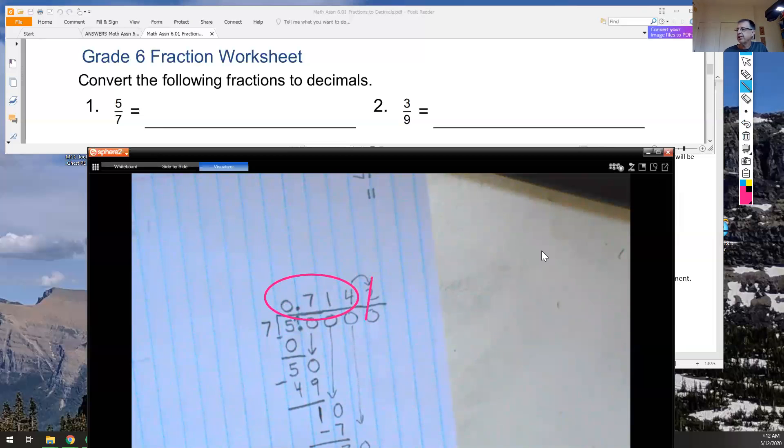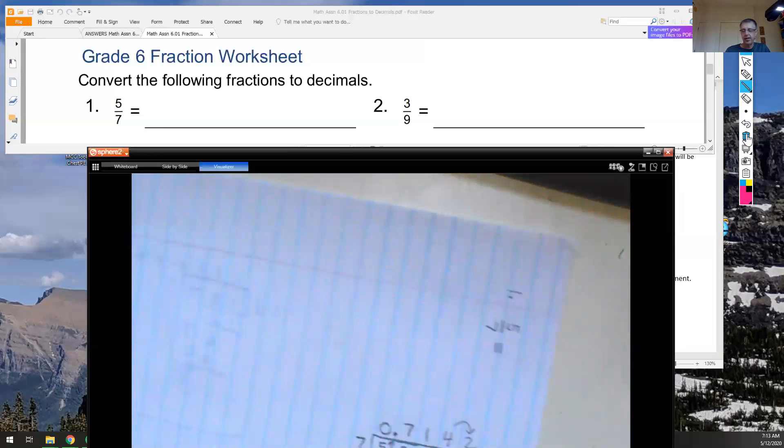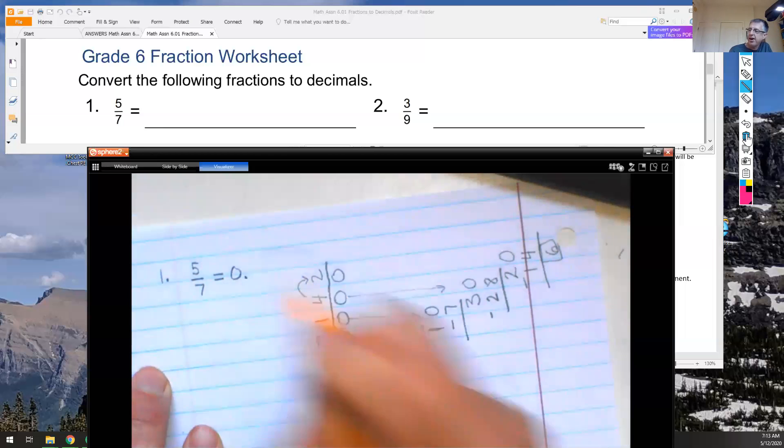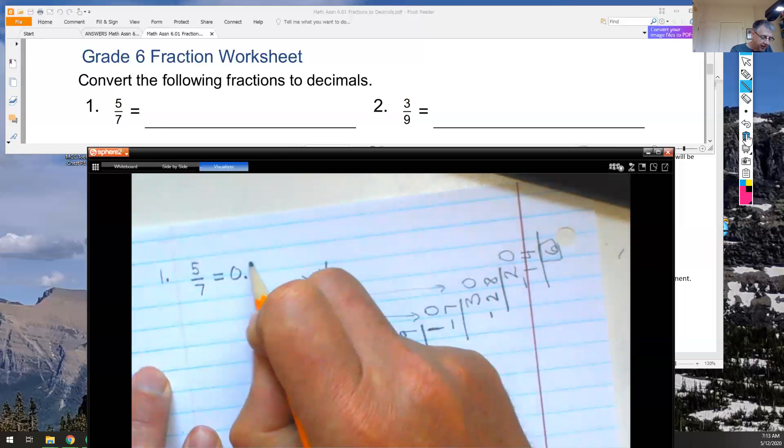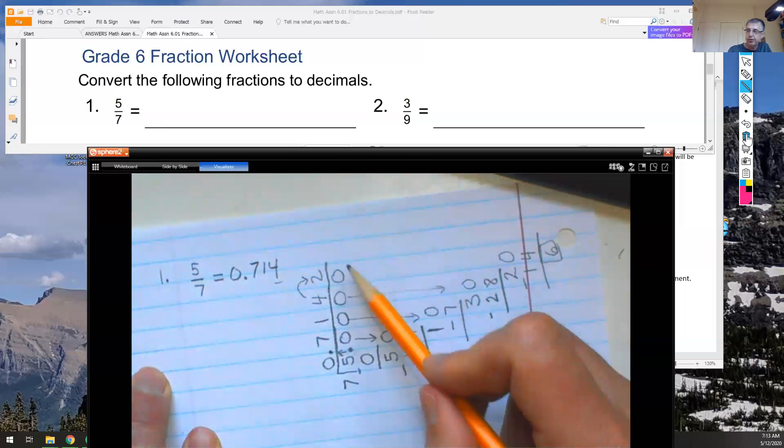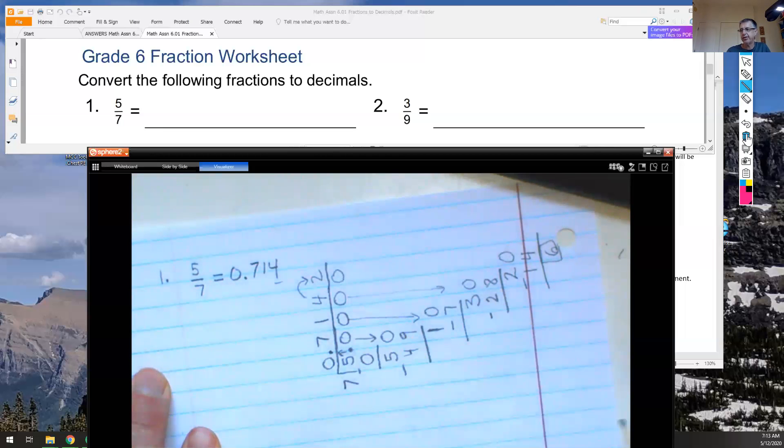What I'll do right now is I'll go ahead and then write that into my answer right here. 5 sevenths is equal to 0 and 714 thousandths. I'm going to stop at the thousandths place. I'm going to round if I need to when I get to the ten thousandths place.